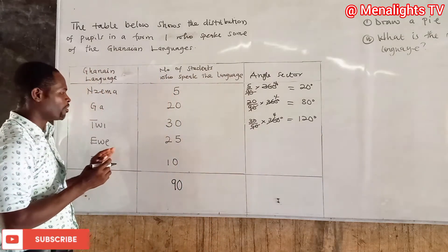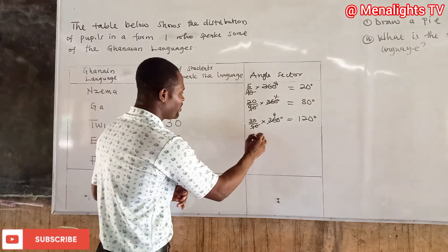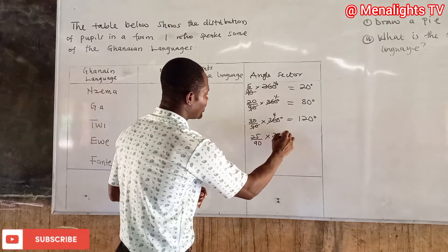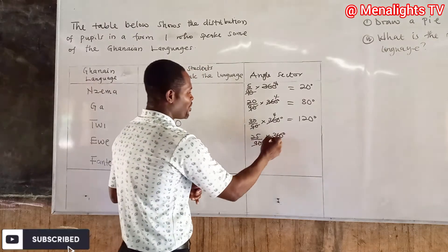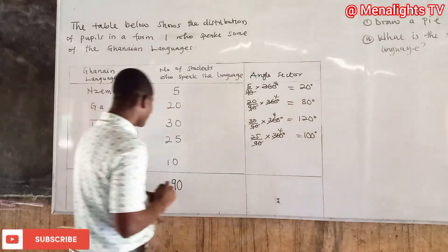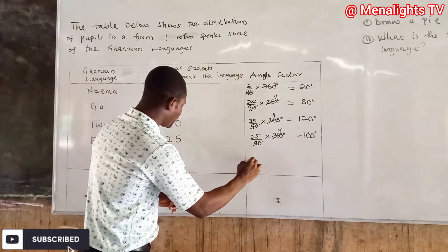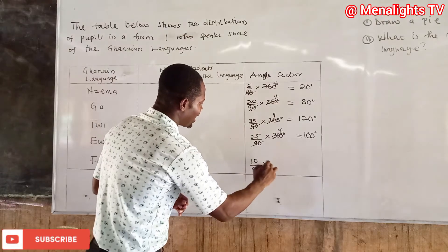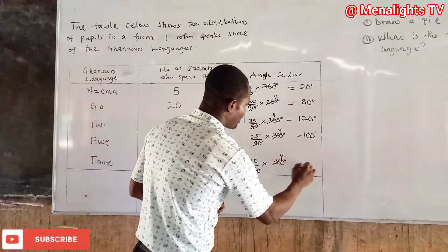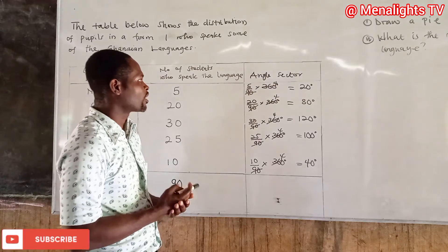For Ewe, we repeat the same method: (25/90) × 360 degrees, which gives us 100 degrees. Then for the last language, Fanti, we have 10 people: (10/90) × 360 degrees, which gives us 40 degrees.